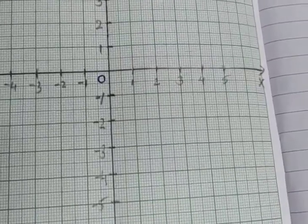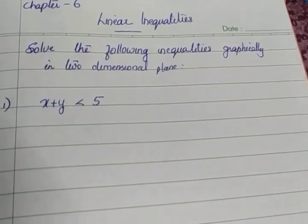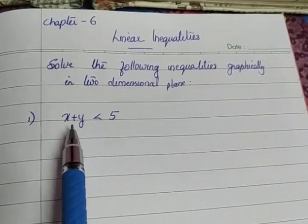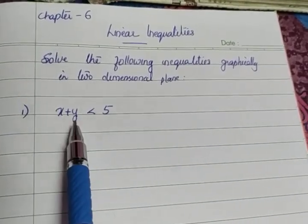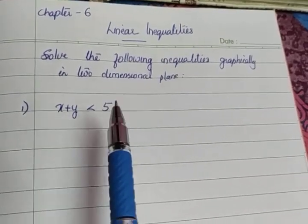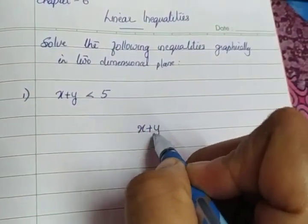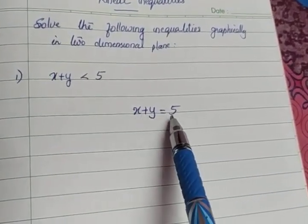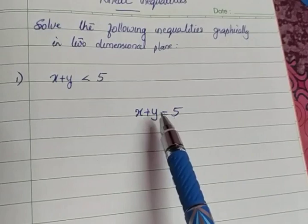Now we are going to plot the graph. The question given is to solve the following inequalities graphically in a two-dimensional plane, and the inequality given is x plus y less than 5. We are not going to draw the graph of the inequality directly. We will shade the region in which the points x and y lie satisfying the inequality. So, we take the equation x plus y equal to 5. This is a linear equation in two variables, so the graph will be a straight line.